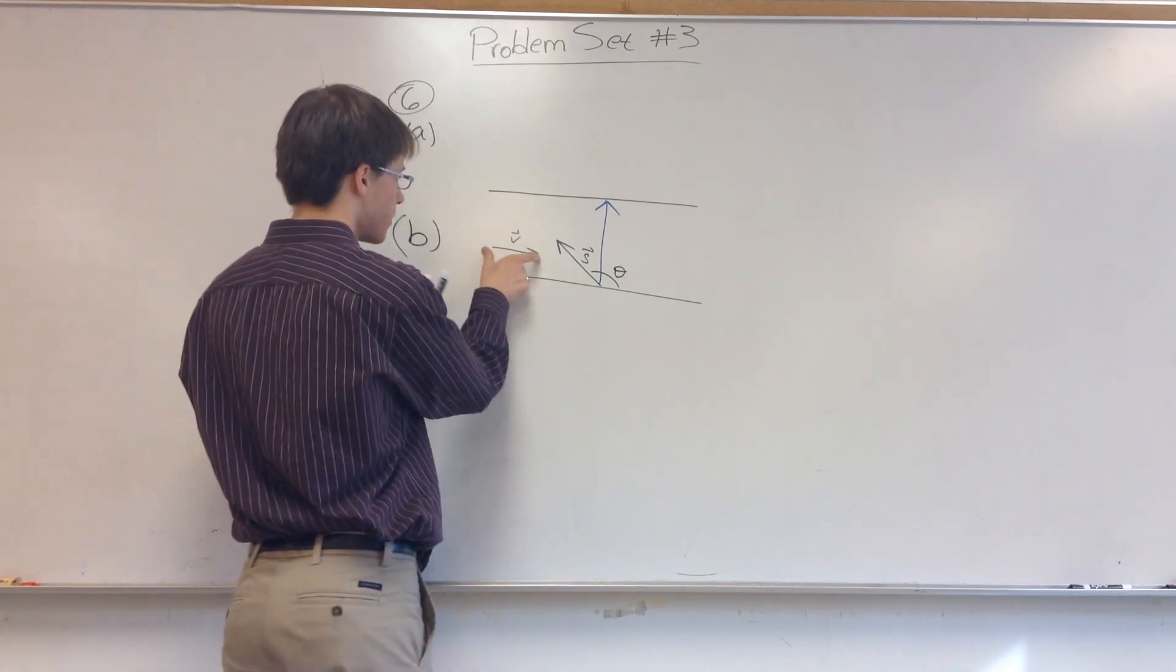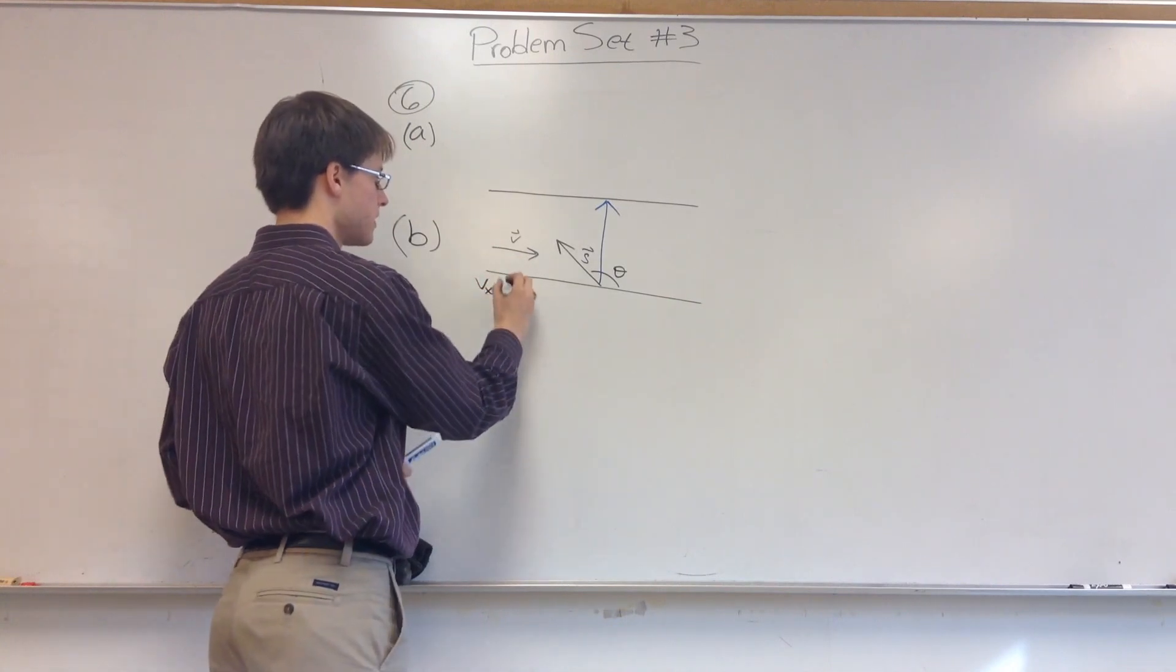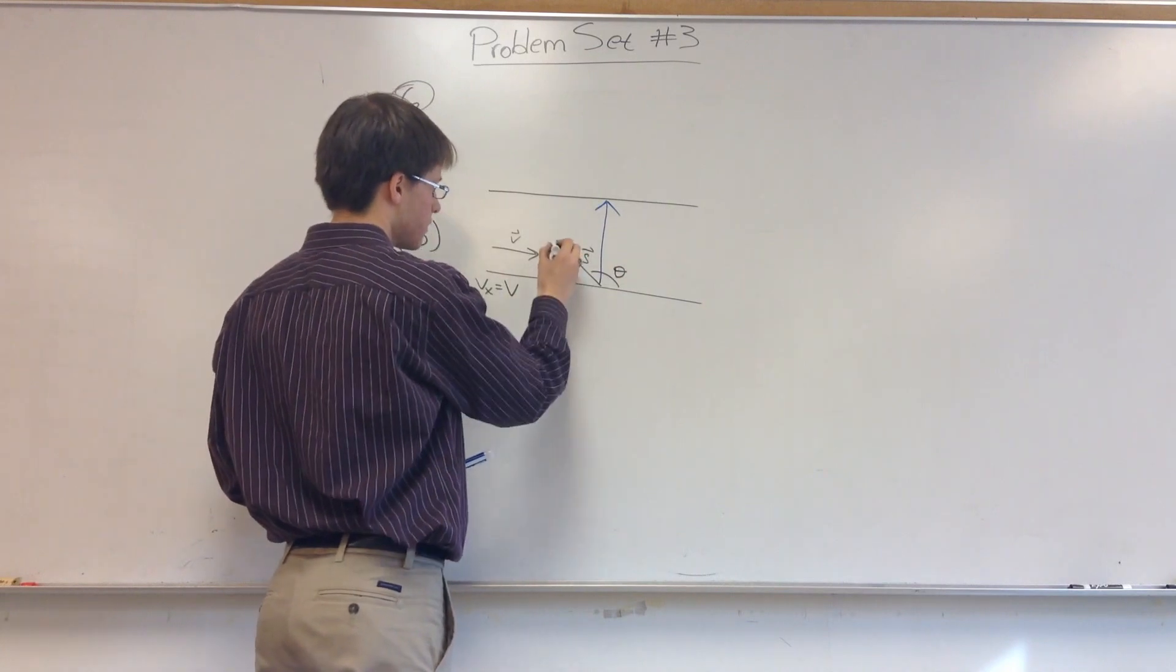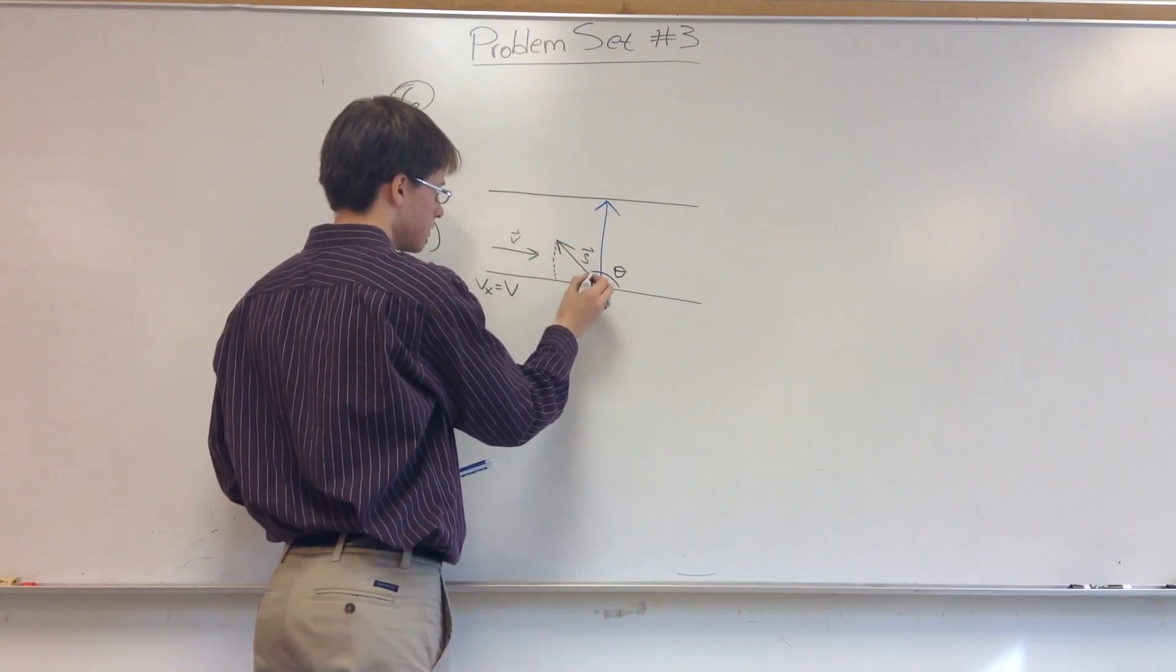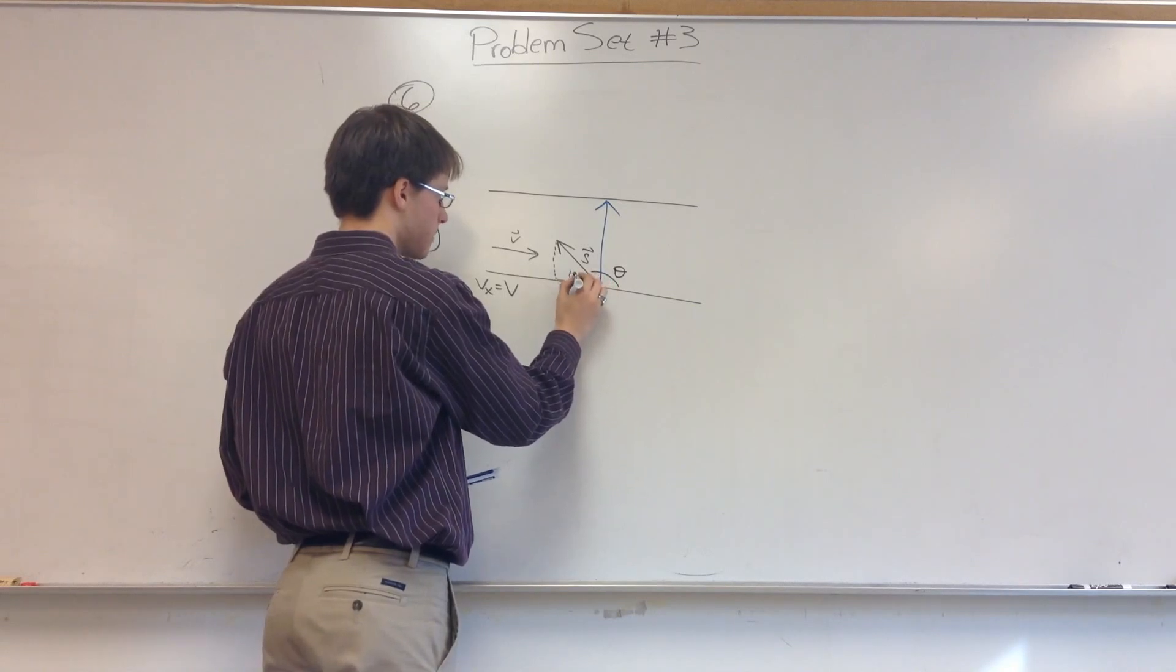So the X component of this vector is simply equal to V because it's the entire thing. The X component of this vector, let's see, we have something that looks like this, where this angle here is 180 minus theta,